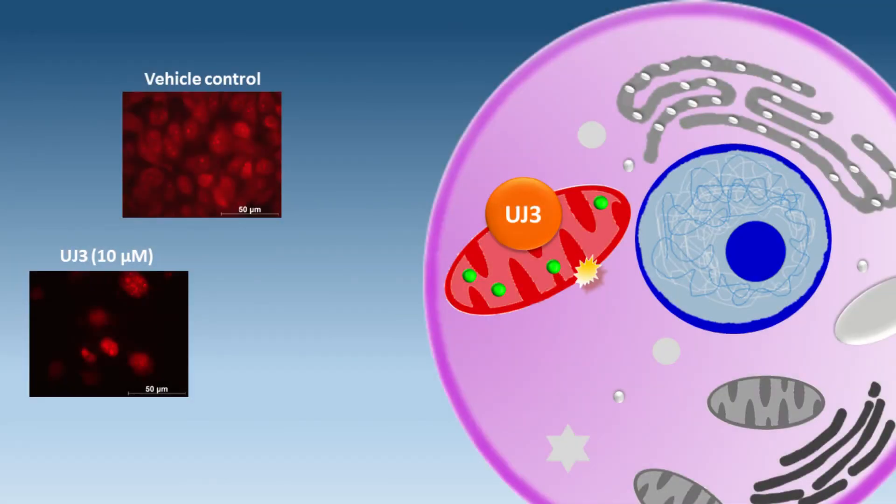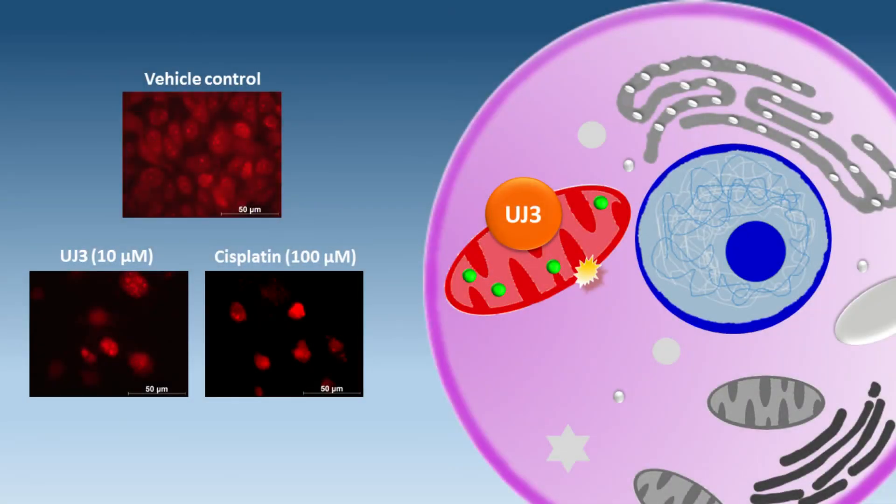The UJ3 image shows how few mitochondria are still lighting up and producing energy after treatment with 10 micromolar. The last image shows how few mitochondria are still active after treatment with 100 micromolar cisplatin.